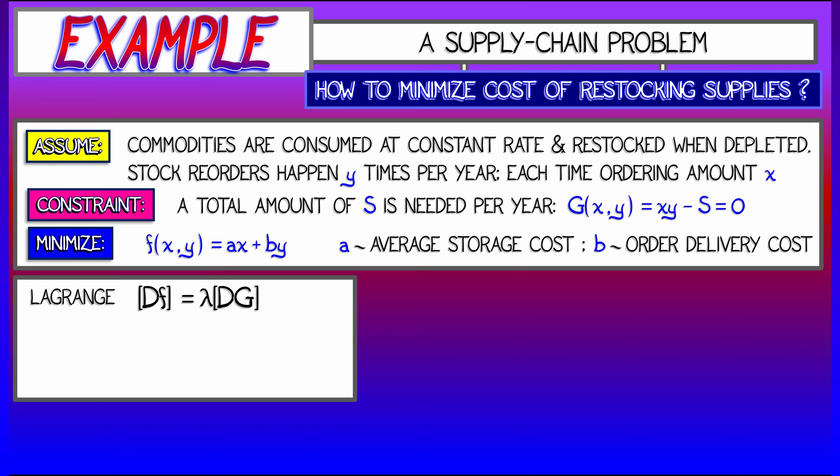So df equals lambda times dg. In this case, our variables are x and y. Let's start with the partial derivatives with respect to x. df dx is equal to a, and dg dx is equal to y. So the first equation is simply a equals lambda times y. If we solve for lambda, then what we're going to get is that lambda is equal to a over y.